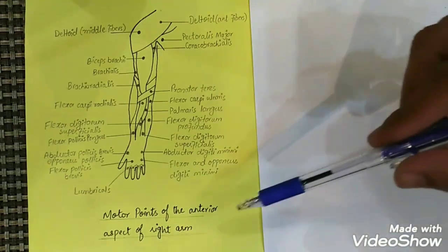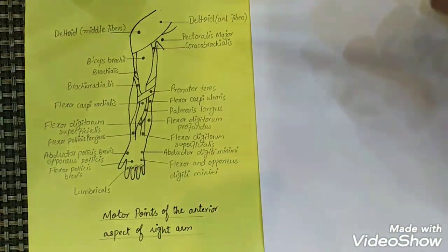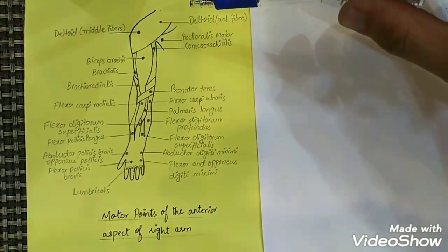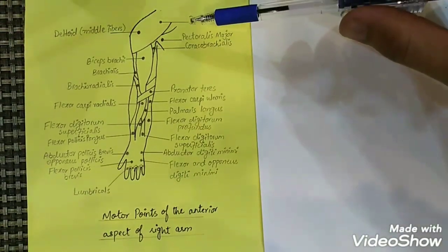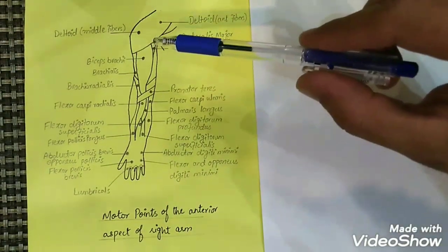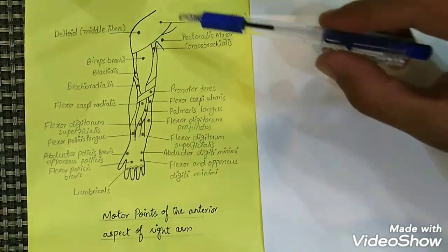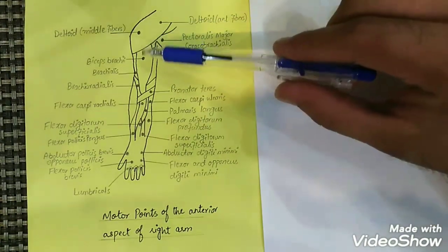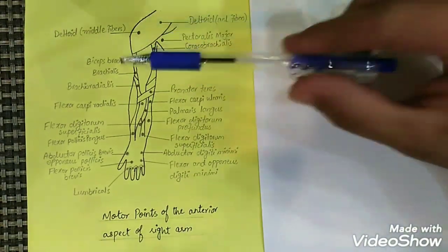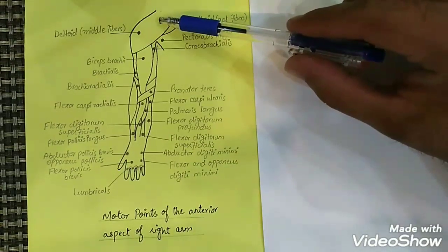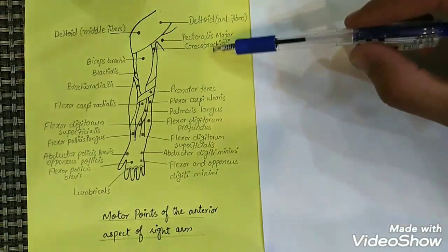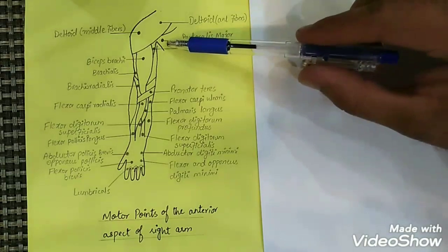First, there are the fibers of the deltoid — the anterior fibers and the middle fibers, which have motor points located here and here. The posterior fibers of the deltoid have motor points on the posterior aspect of the arm. Then there is the pectoralis major muscle, which has a motor point here.